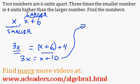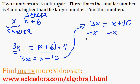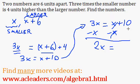Now I'm going to continue with the equation over here because I'm sort of running out of room down there. Now I can subtract x from both sides of the equation. 3x minus x, 2x equals 10.